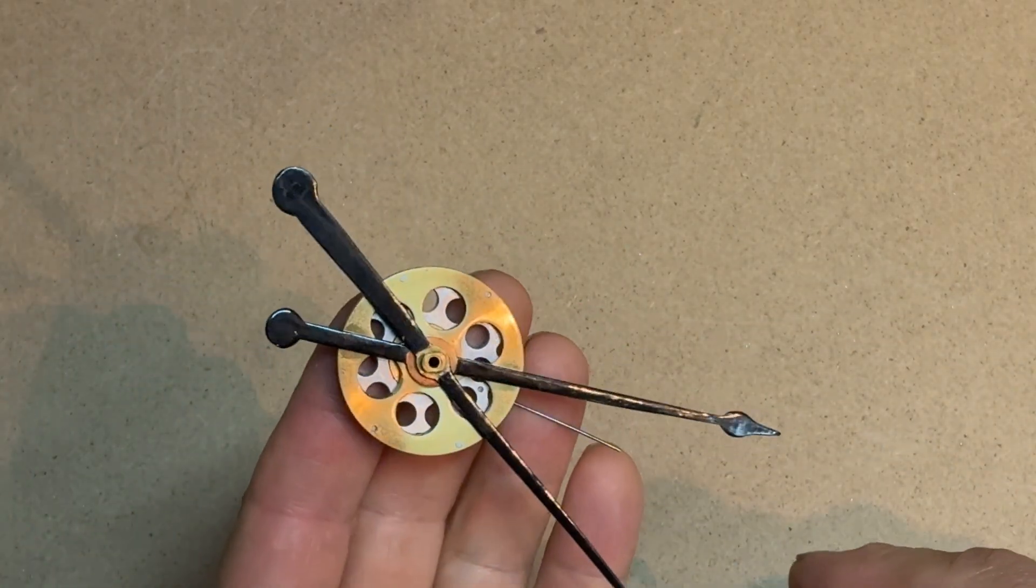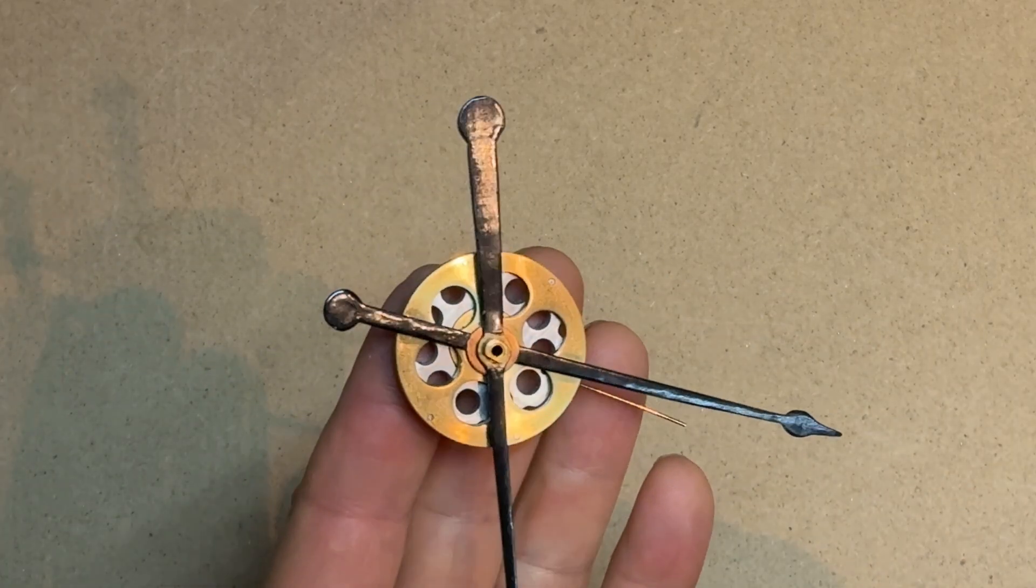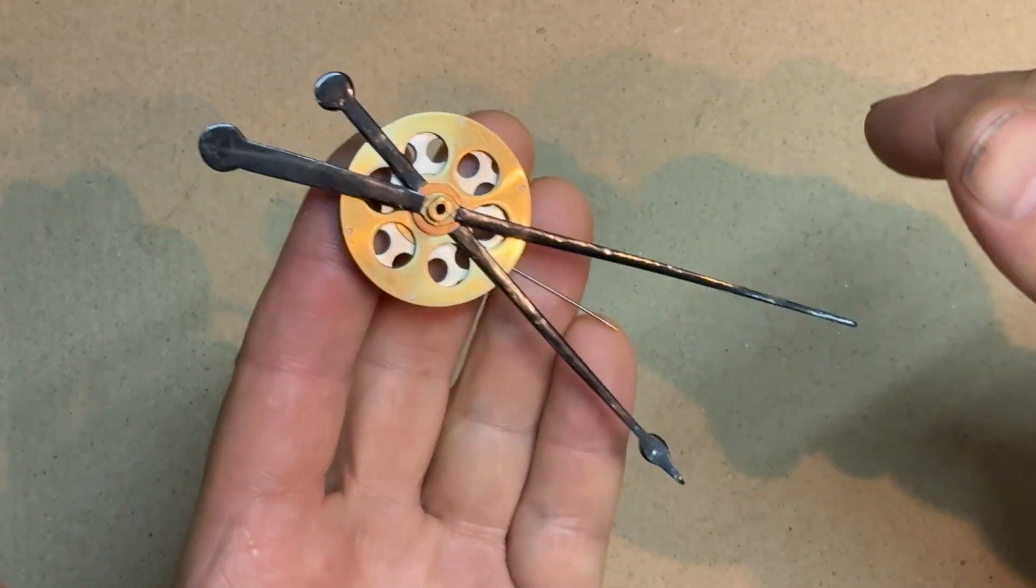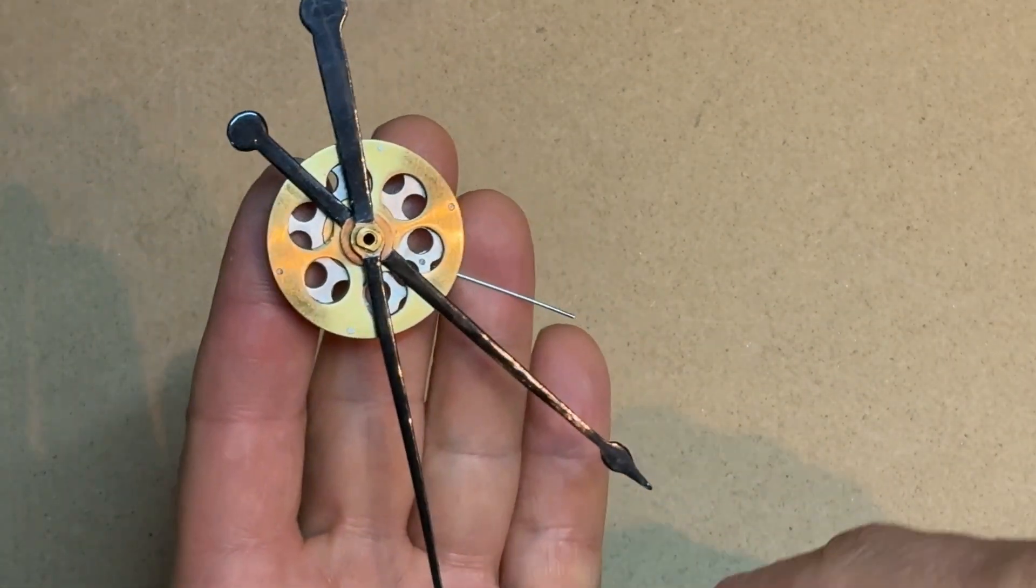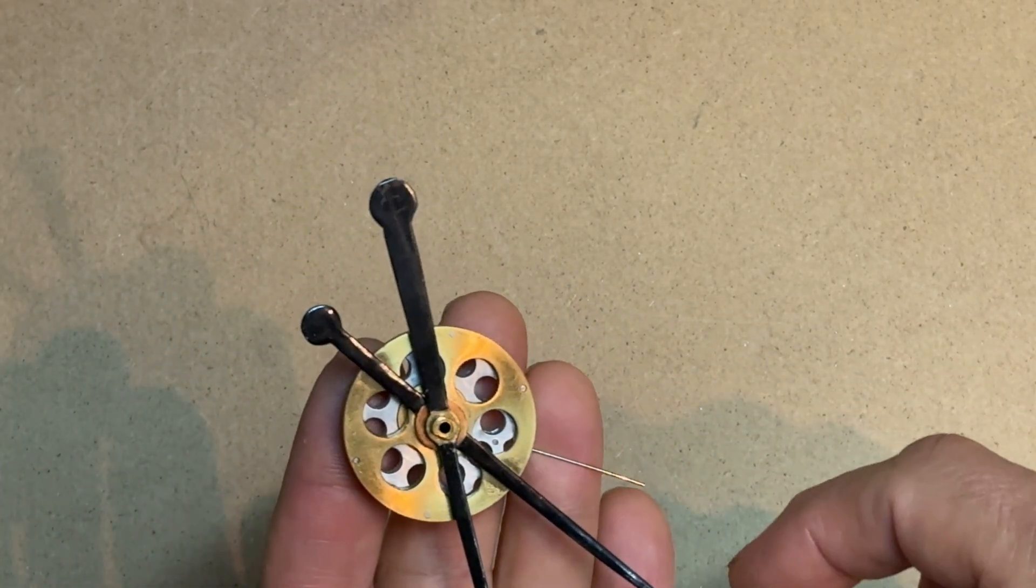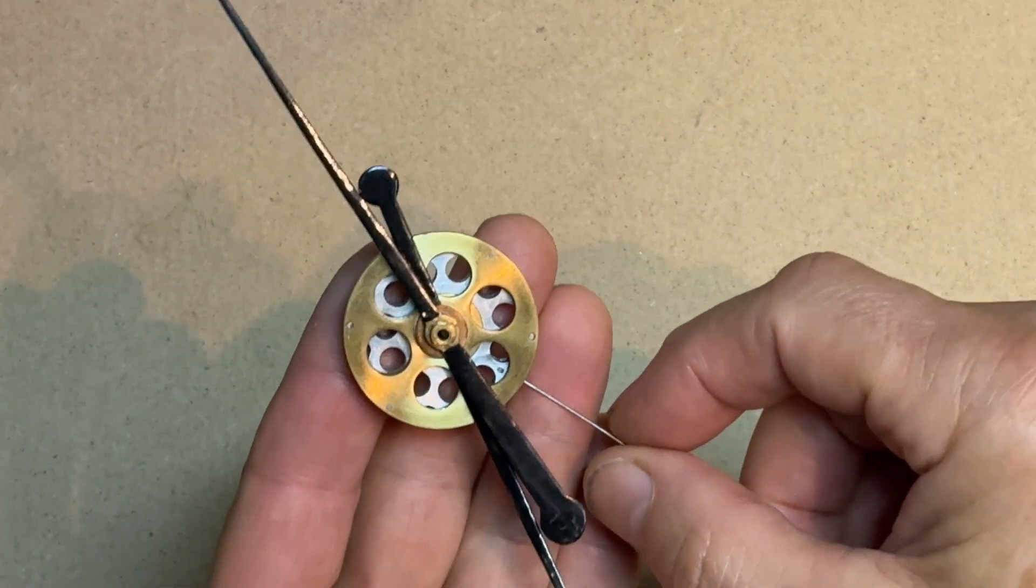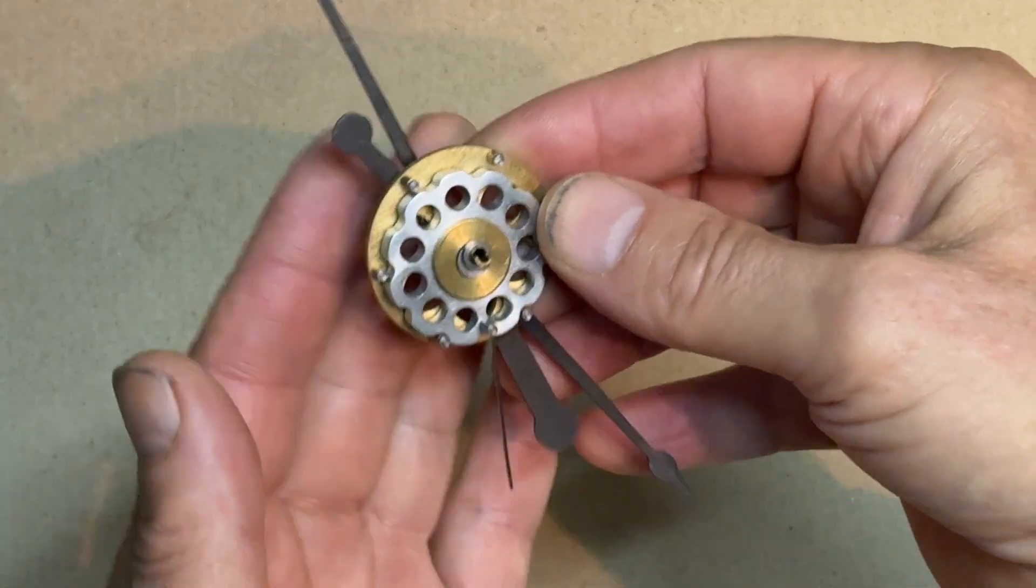One thing I decided to do with the restoration of the clock was to include a daisy wheel for the motion work. This is a really clever design. I think it was invented in the 1830s by the American clockmaker Aaron Dodd Crane. And it's essentially a cycloidal drive with a pin to stop the whole mechanism rotating.